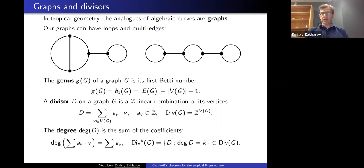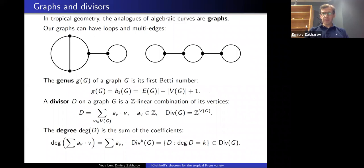Tropical geometry is a kind of combinatorial — or more accurately polyhedral — version of algebraic geometry. The analogs of algebraic curves in tropical geometry are graphs, with or without a metric. A graph can have loops and multiple edges between a pair of vertices, so combinatorialists would call this a multigraph. The genus of a graph is simply its first Betti number: edges minus vertices plus one. A divisor on a graph is an element of the free abelian group generated by the vertices, and the degree of the divisor is the sum of the coefficients.